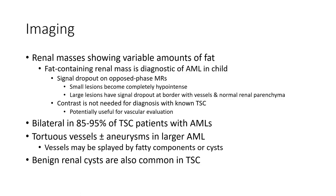Imaging: a renal mass with a visible amount of fat — a fat-containing renal mass is diagnostic of angiomyolipoma. Signal drops out on opposed-phase MRI. Small lesions become completely hypointense; larger lesions show signal dropout at the border with vessels and normal renal parenchyma.